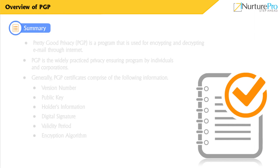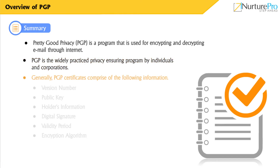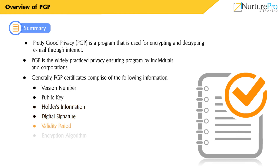Let's have a quick recap. Pretty Good Privacy is a program used for encrypting and decrypting email through the internet. PGP is the widely practiced privacy-ensuring program by individuals and corporations. PGP certificates generally comprise: version number, public key, holder's information, digital signature, validity period, and encryption algorithm. Thank you for watching this video.